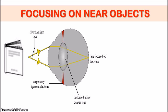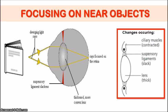These light rays are going to require more bending in order to be focused on the retina. So as a result, in order for the light rays to bend more, the lens has to become thicker in order to let the light rays refract more. So in order for the lens to actually become bigger in size, the suspensory ligaments are going to slacken, and the ciliary muscles are going to contract.